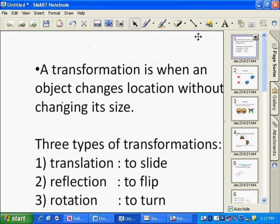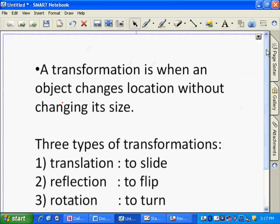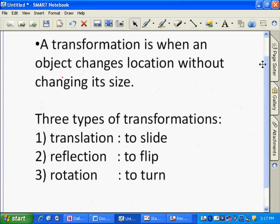I'm going to talk to you about transformations and different types of changes. A transformation is just a very general term that means an object changes its location without changing its size or shape. You're just changing where the object is.